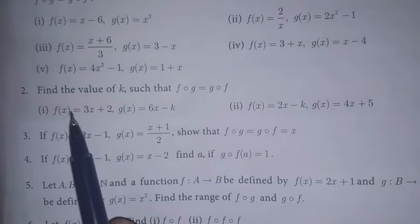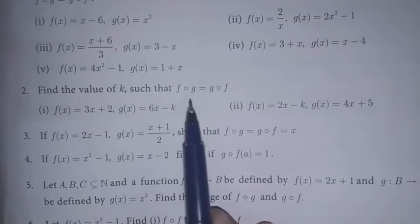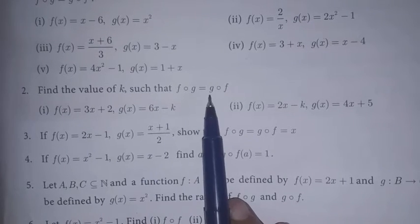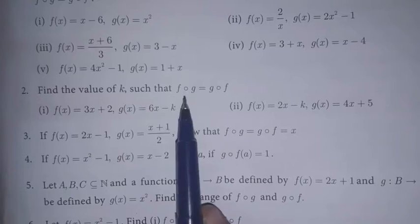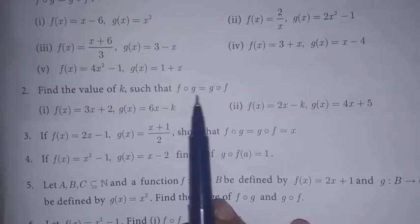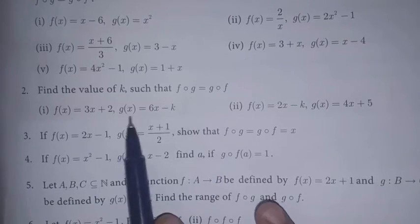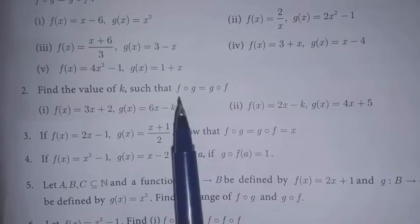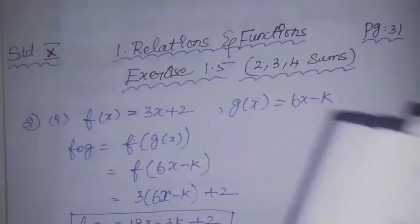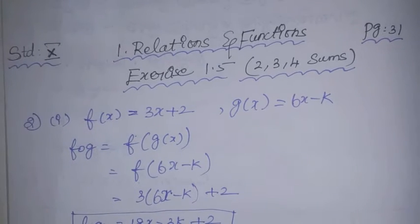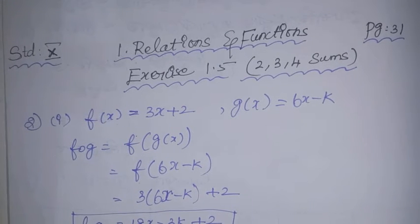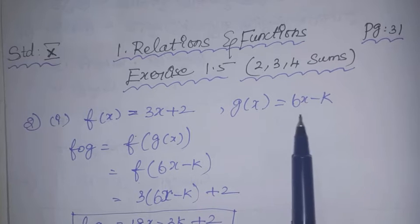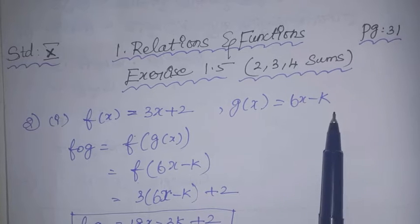Second sum: find the value of k such that f∘g is equal to g∘f. We have two subdivisions. First, we have f(x) = 3x + 2 and g(x) = 6x - k.